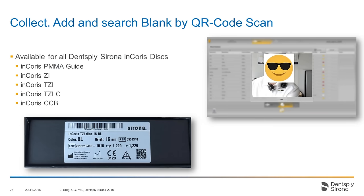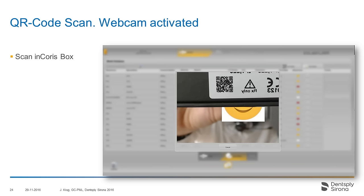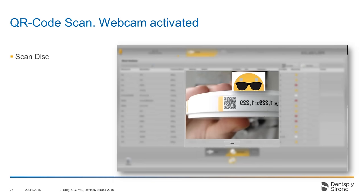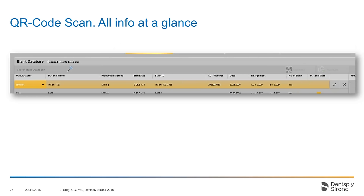The QR code is either on the package or on the disk itself. You hold the QR code in front of the webcam and it reads the information — as you can see here — and it enters all information for that disk automatically into your blank database.